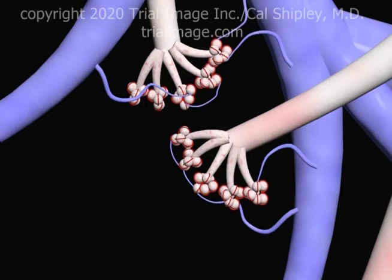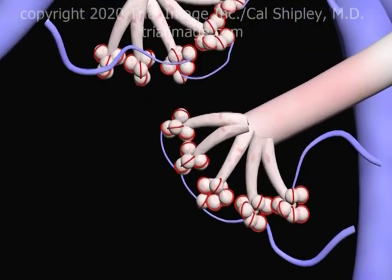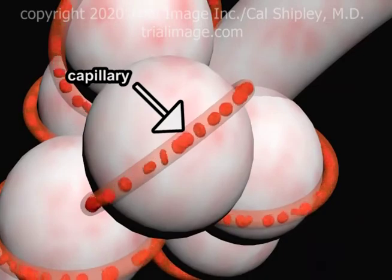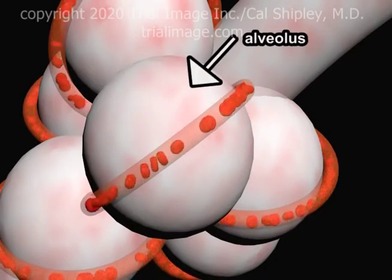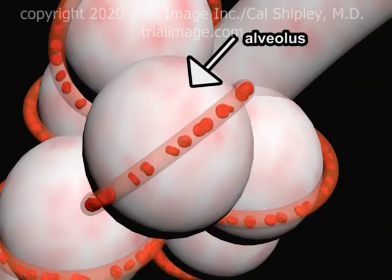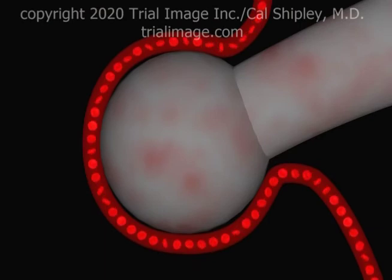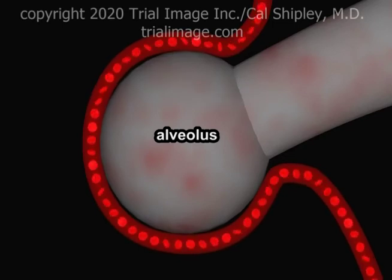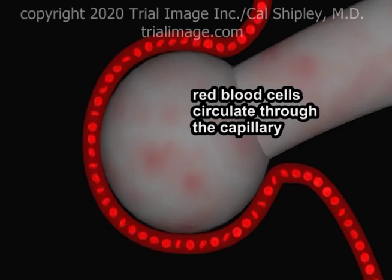Just to give you some sense of the size of these structures, here is the shaft of a typical paper clip, which is about one millimeter in diameter. Moving in closer, we can see the intimate physical relationship between the capillaries and the individual alveoli. The capillaries are made semi-transparent, exposing the individual red blood cells circulating through them. The capillary is in close contact with a single alveolus, and a respiratory bronchiole is attached to the alveolar sac. The diameter of a capillary is just greater than that of a red blood cell, which keeps the red blood cells in close proximity to the wall of the alveolus.